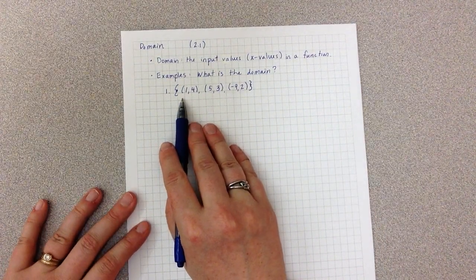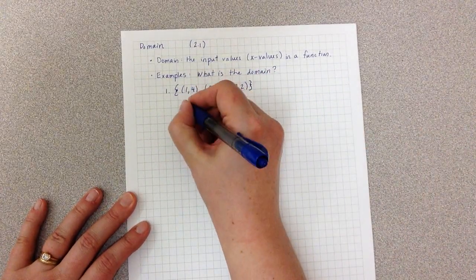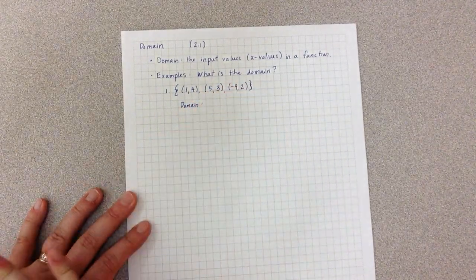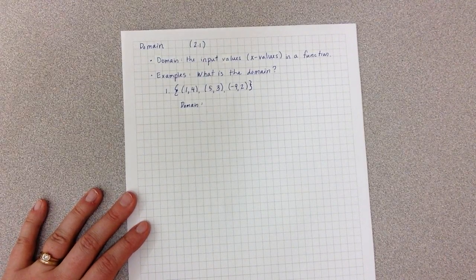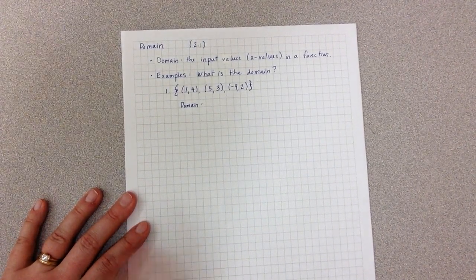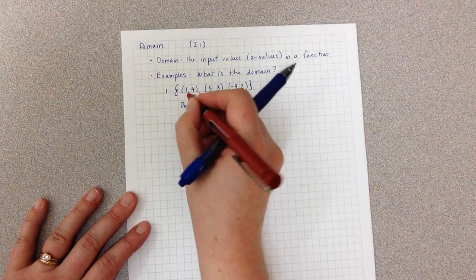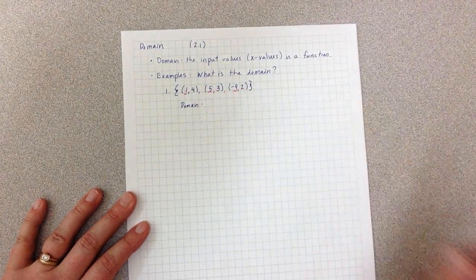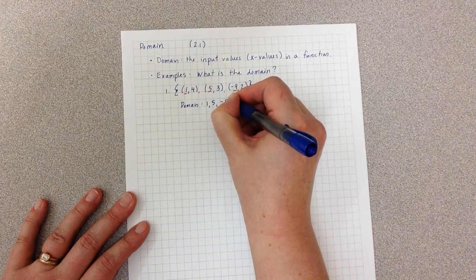In example one, we're given this list of points and we're asked to find the domain. There are a lot of different ways to write domain, but for now we're just going to have it be simply a list or a phrase. The domain is all of my x values, so that's one, five, and negative nine.